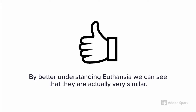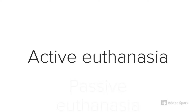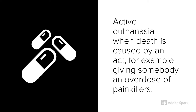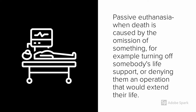Euthanasia is a process that has two distinct forms: the active and the passive form. Active euthanasia is when death is caused by an act — for example, giving somebody an overdose of painkillers. Passive euthanasia, on the other hand, refers to the omission of something — for example, turning off somebody's life support or denying somebody an operation that would extend their life.